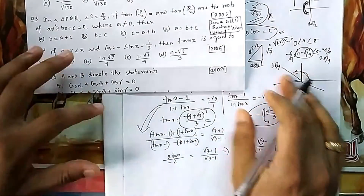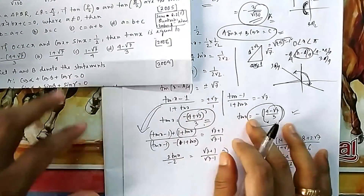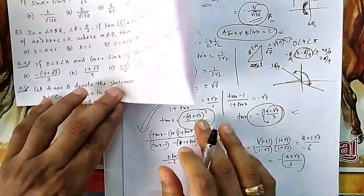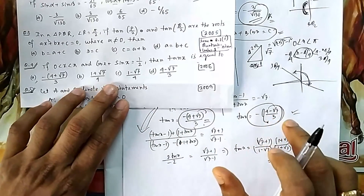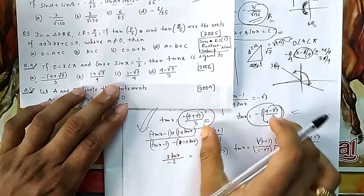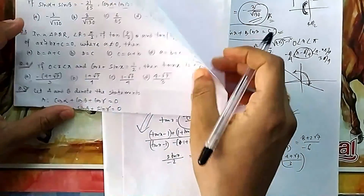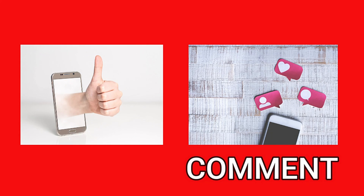Since tan(x - π/4) can be ±√7, you must compute tan x for both cases separately. Both values are valid mathematically, but check which one appears in the given options — that will be the answer. If you liked the video, press the like button and leave your valuable comments in the comment section.